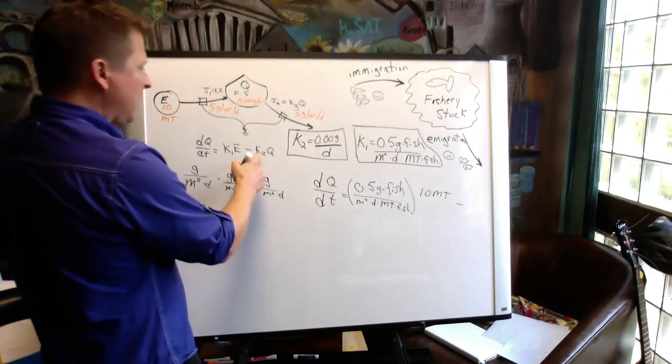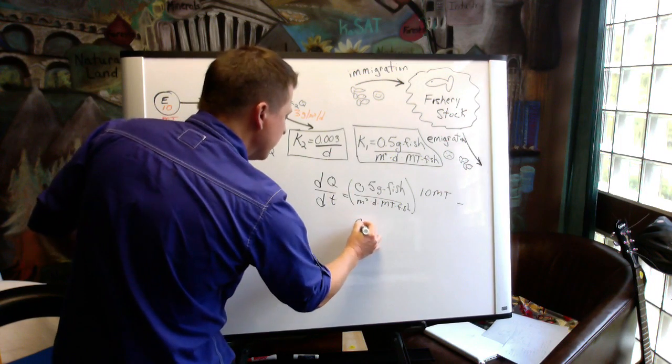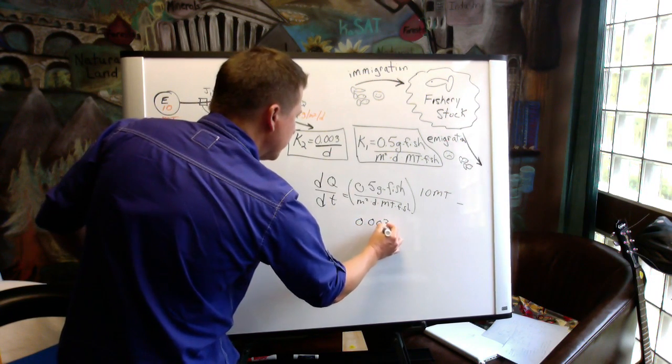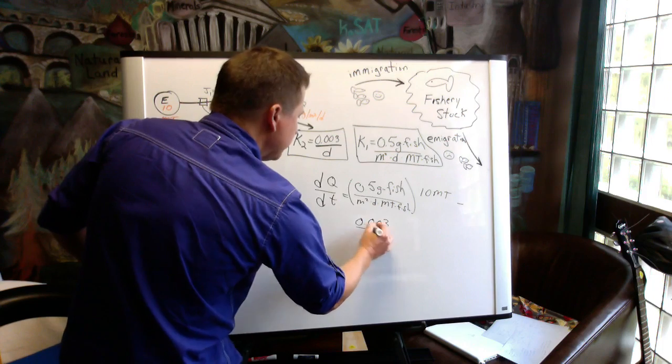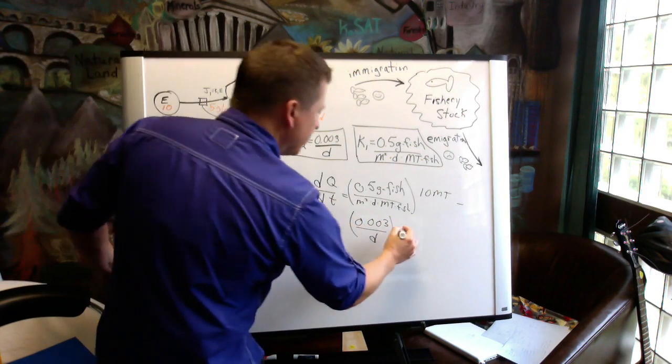And then K2 Q minus that. K2 is 0.003 per day times Q, which was a thousand grams per square meter.